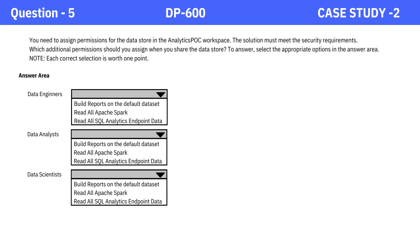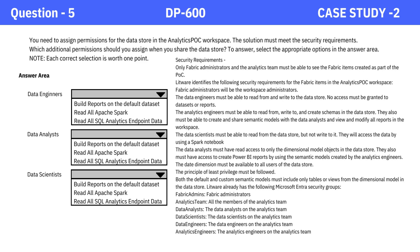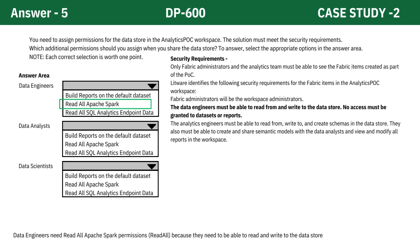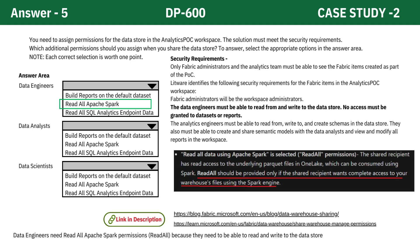Question: you need to assign permissions for the data store in the Analytics POC workspace. The solution must meet the security requirements. Which additional permissions should you assign when you share the data store? Pause the video, take a moment to think it through, and then check out the answer. The correct answer for data engineers is Read All Apache Spark, which is the read-all permission. This permission is necessary because data engineers need to read and write data to the data store, as specified in the security requirements. According to Microsoft documentation, the read-all permission should be provided only if the shared recipient wants complete access to your warehouse's files using the Spark engine.